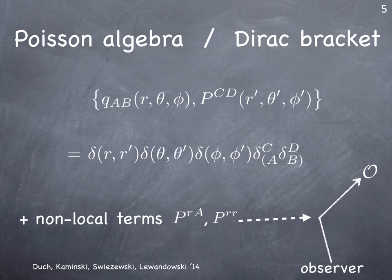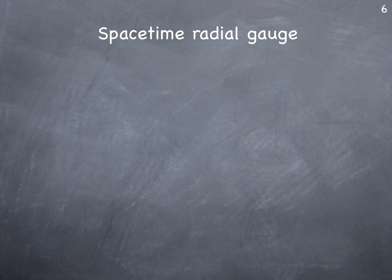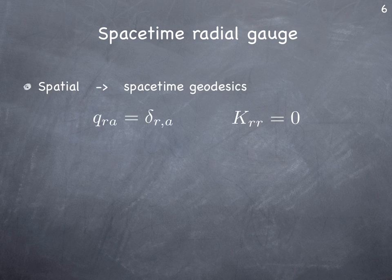The main point of the cited paper was to upgrade these gauge conditions so that we don't only describe spatial geodesics but that these spatial geodesics are also space-time geodesics, which is the construction used in the ADS-CFT correspondence. To do that, you not only impose q_{ra} equal to delta_{ra}, but you also impose that the radial-radial component of the extrinsic curvature K_{rr} is zero, and then by looking at the geodesic equation for spacetime you find that it is satisfied.